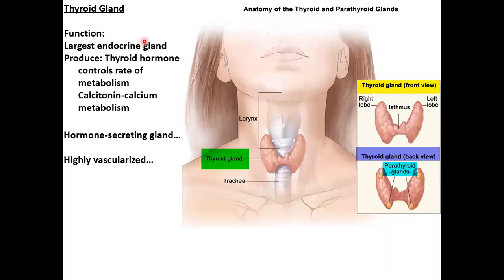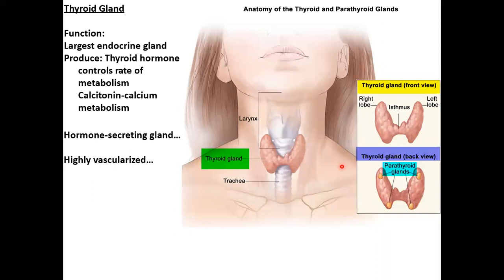Your thyroid gland is your largest endocrine gland. It produces thyroid hormone, which helps control your metabolism, and also produces calcitonin, which helps with calcium balance in the blood. Calcitonin and parathyroid hormone — which comes from the parathyroid gland — balance each other: calcitonin tells calcium to go into your bones, while parathyroid hormone tells your bones to release calcium into the blood. This balance is critical because we need calcium for contraction of all muscles — both smooth and skeletal. The thyroid is also highly vascularized.